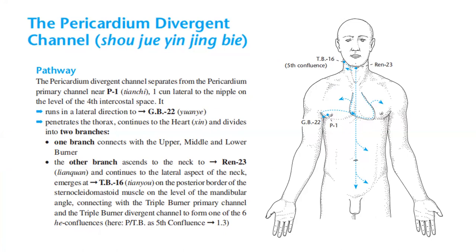One branch connects with the upper, middle, and lower burner. The other branch ascends to the neck to REN23 and continues to the lateral aspect of the neck, emerging at TB16 on the posterior border of the sternocleidomastoid muscle at the level of the mandibular angle, connecting with the triple burner primary channel and the triple burner divergent channel, performing one of the six head confluences — the pericardium and triple burner as the fifth confluence.